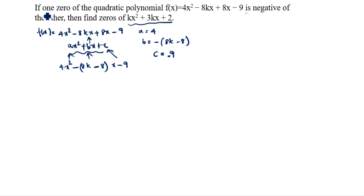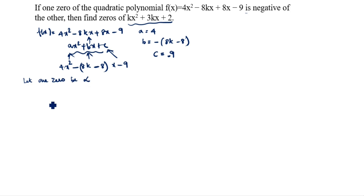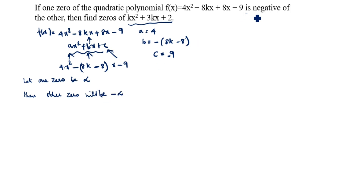What is given in this question? If one zero of the quadratic polynomial is negative of the other, we let one zero be alpha. Then the other zero will be minus alpha, because it is given as negative of the other.